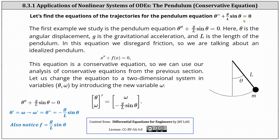We've seen this equation before. Recall theta is the angular displacement, g is the gravitational acceleration, and l is the length of the pendulum as shown below. In this equation, we disregard friction, so we are talking about an idealized pendulum. Also notice the pendulum equation is a conservative equation, meaning it fits the form x double prime plus f of x equals zero, where the function f is g divided by l sine theta. Because of this, we can use our knowledge of conservative equations to help determine the equations of the trajectories.